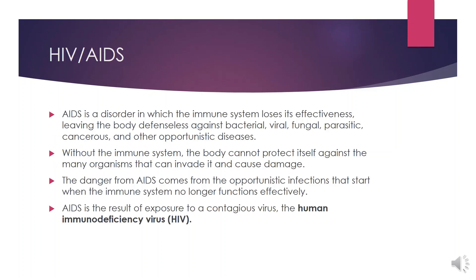AIDS is a disease in which there is severe loss of body cellular immunity, greatly lowering the resistance to bacterial, viral, fungal, and parasitic infections. Cancerous and other opportunistic diseases can also occur because, without the immune system, the body cannot protect itself against many organisms that may invade and cause damage. The danger from AIDS comes from these opportunistic infections that start when the immune system no longer functions effectively.